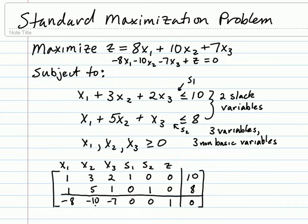To decide where to pivot, we identify the most negative indicator in the last row, and that would be the -10. Therefore, we know that we will be pivoting in the second column.